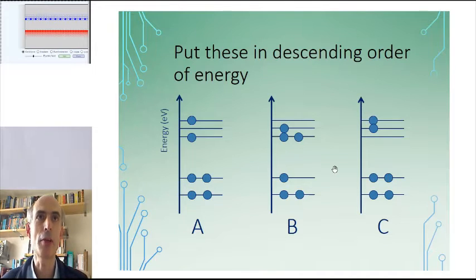OK, well, the first thing you might notice is that C clearly has more energy than A, because the only difference between A and C is that this electron has moved up here. That would be an increase in energy, so C has greater energy than A.